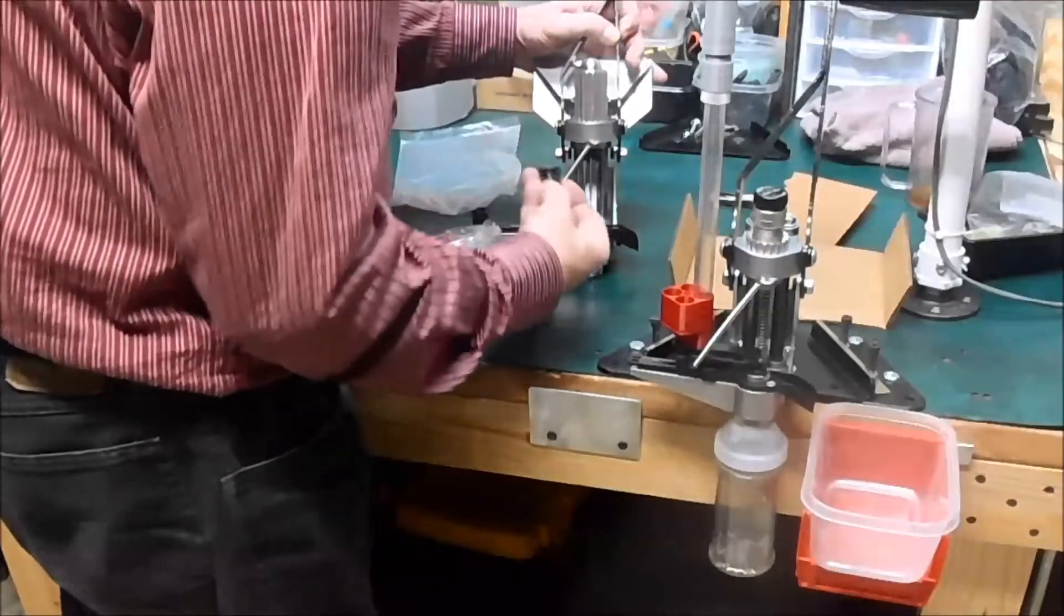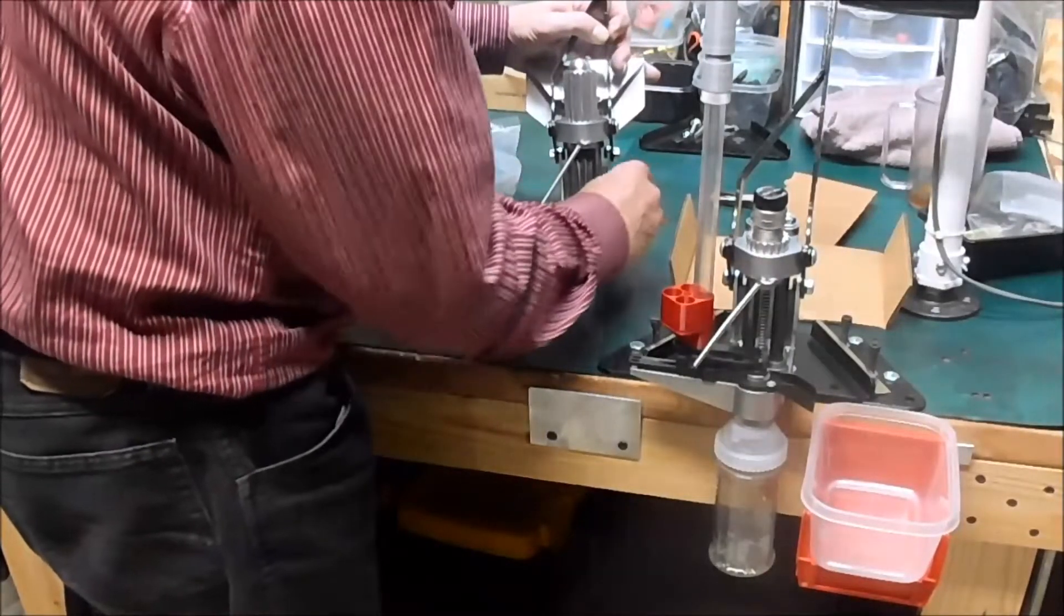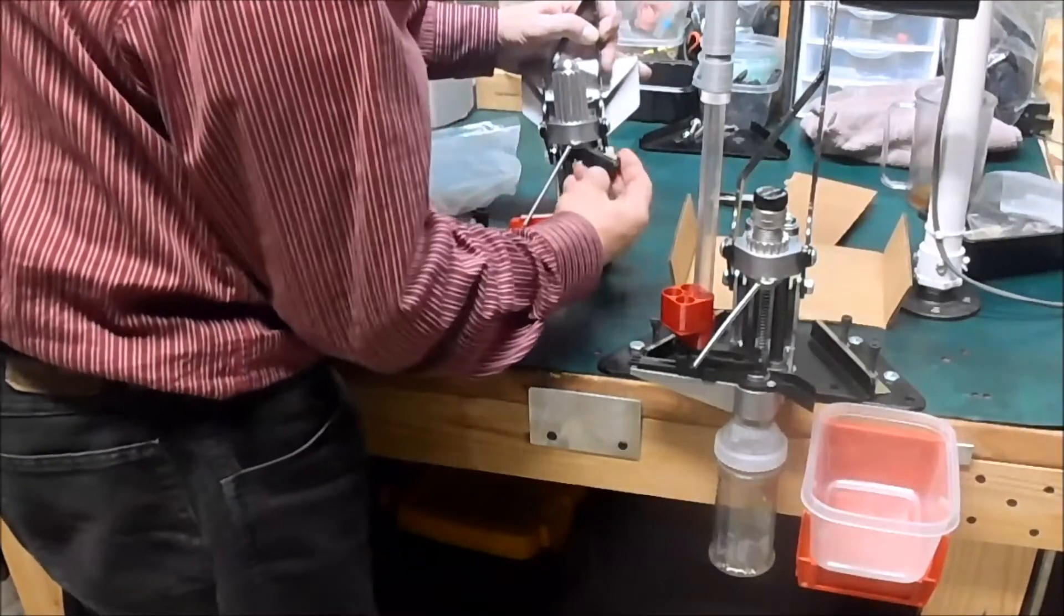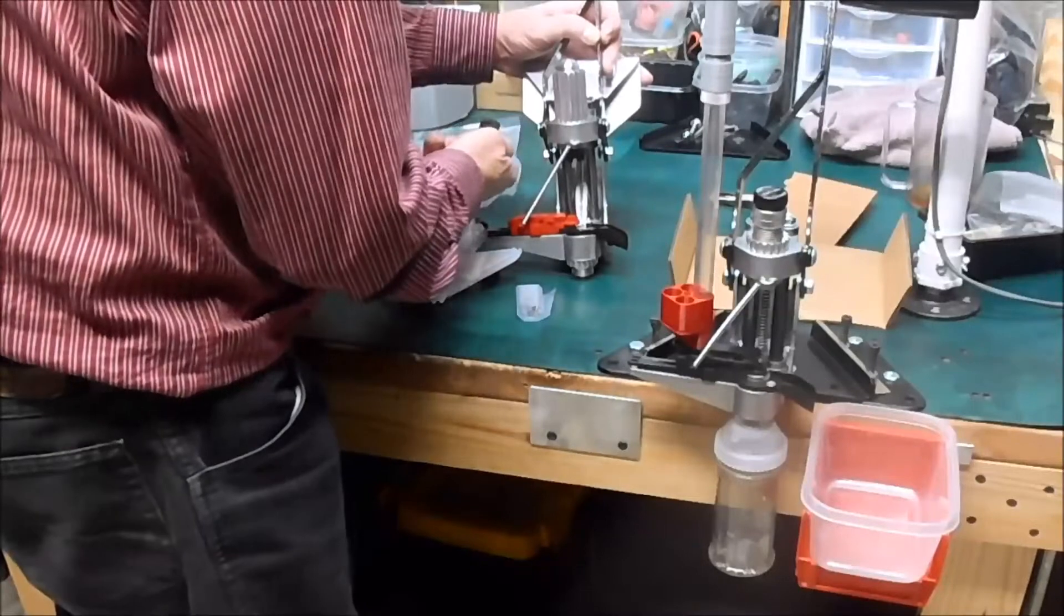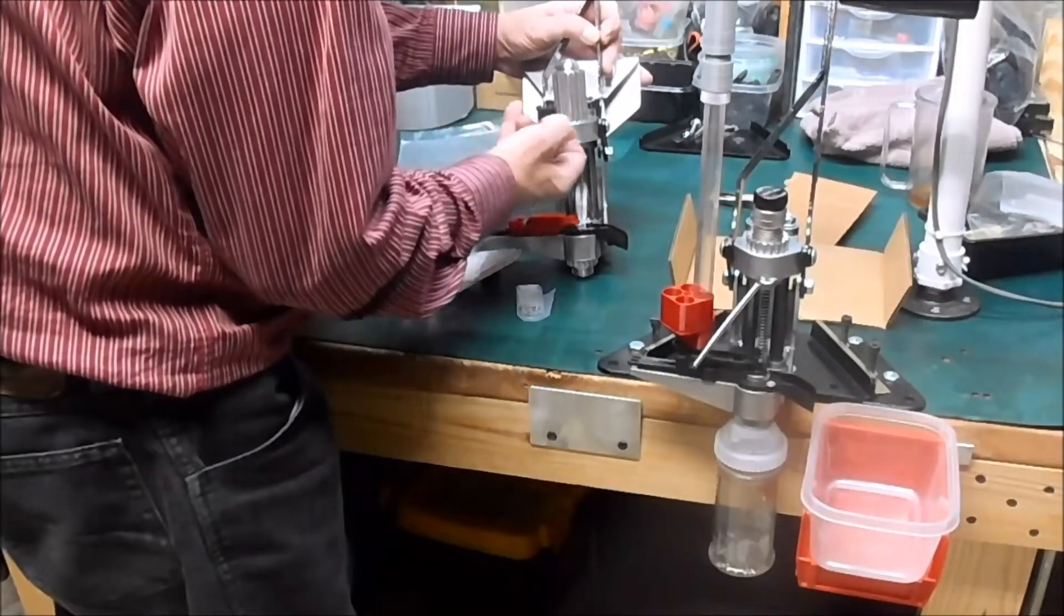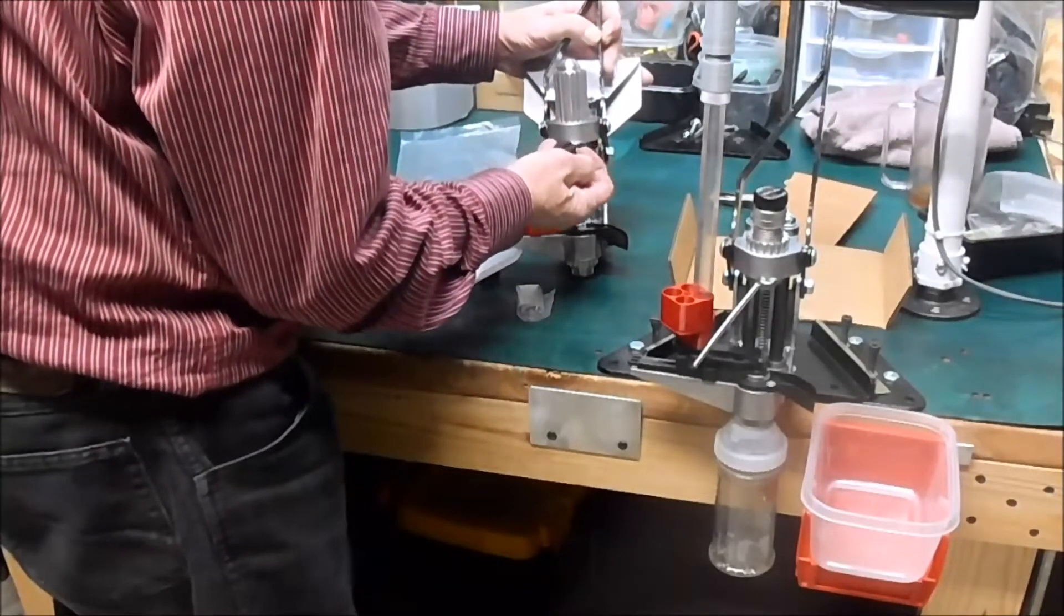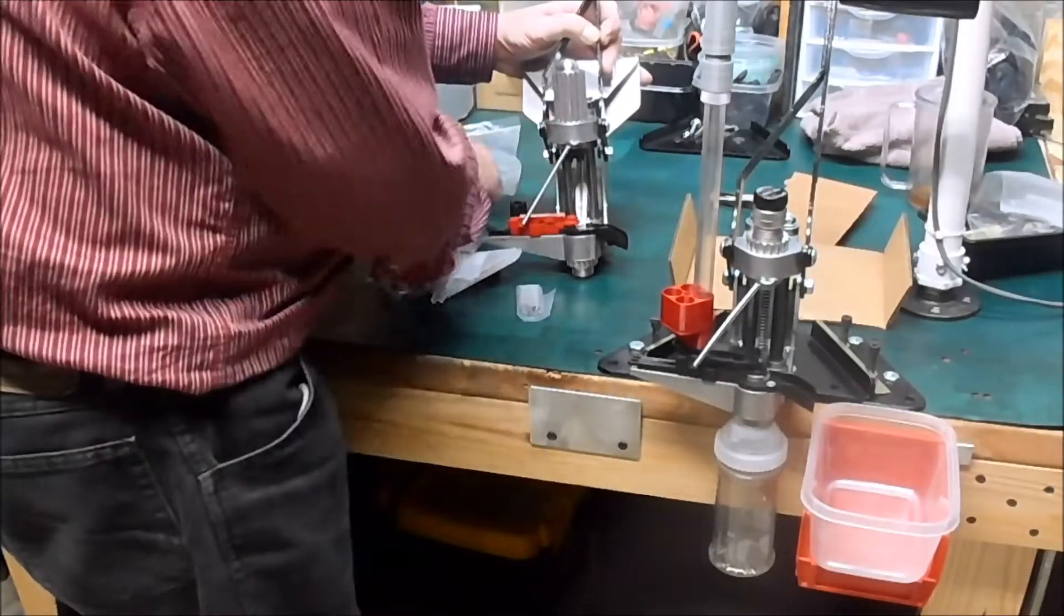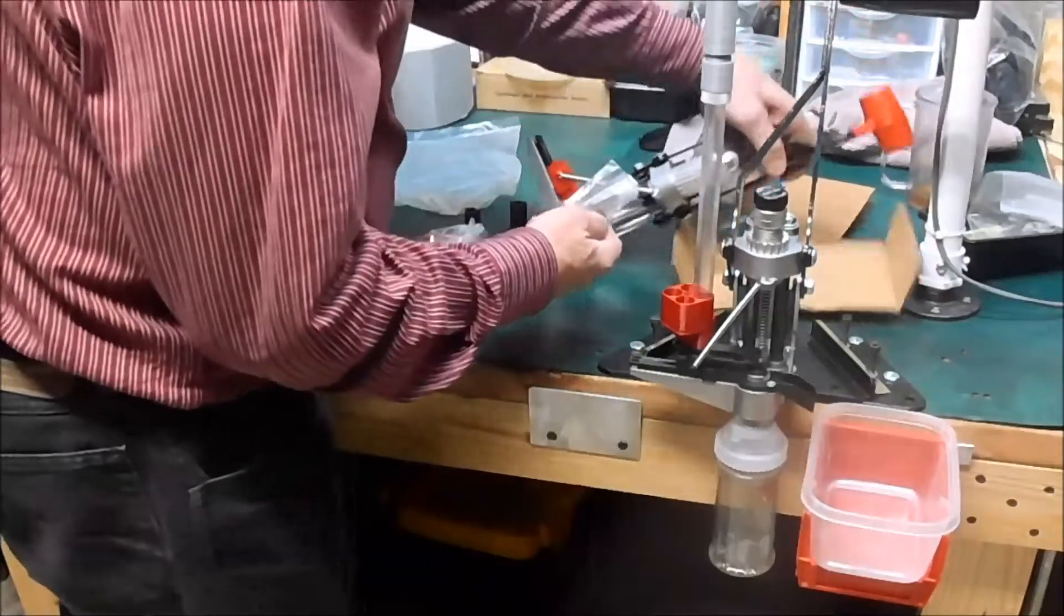These bushings are gonna go down below here, there's a hole. They have markings on here, that's for small primers and that's for large primers.